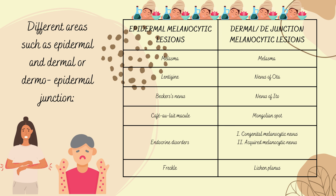Melanocyte lesions occur in different areas: epidermal, dermal, or at the dermoepidermal junction. In epidermal melanocytic lesions, examples include melasma, freckles, and endocrine disorders. In dermal or dermoepidermal junction lesions, examples include melasma, lentigo, nevus of Ota, nevus of Ito, Mongolian spot, and acquired melanocytic lesions. Epidermal melanocytic lesions show freckles, while dermal or dermoepidermal junction lesions show conditions like lichen planus.